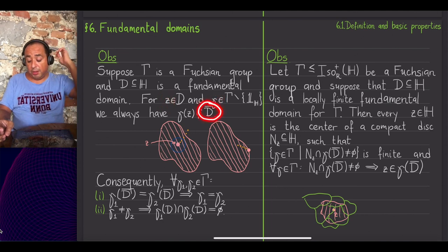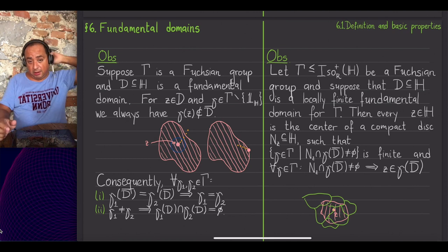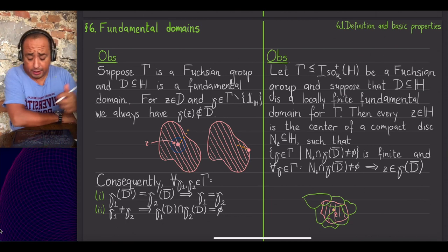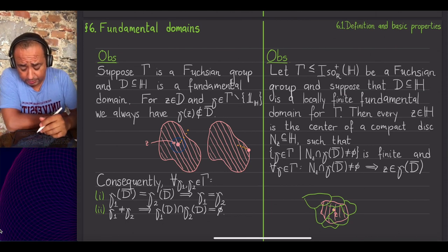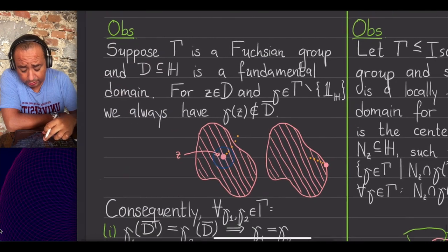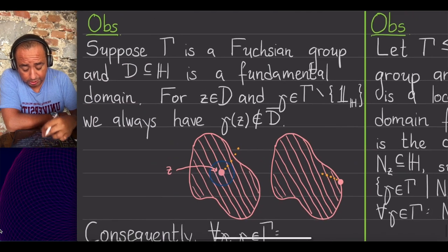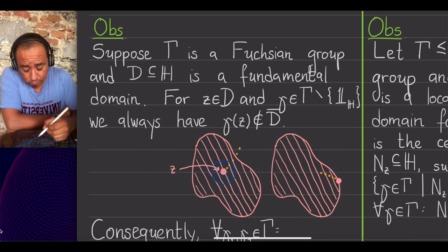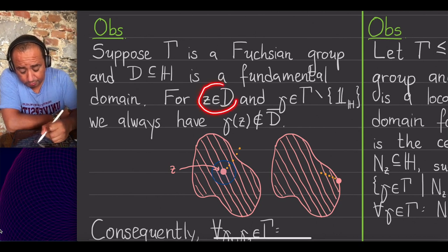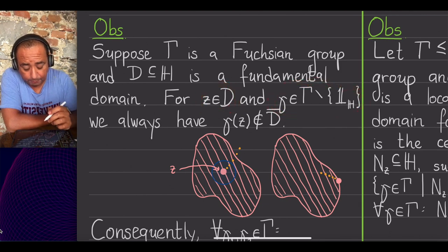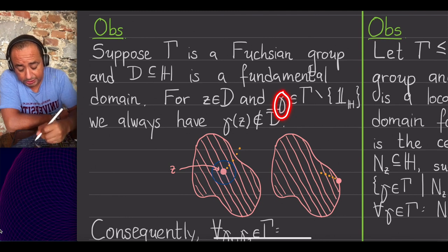Let's start with an observation that is valid for arbitrary Fuchsian groups and arbitrary fundamental domains — not necessarily locally finite ones. It is that if you take a point Z in D and any non-identity element of gamma, then the image of Z under that element is not in the topological closure of D — it is completely outside not only D but actually D-bar.